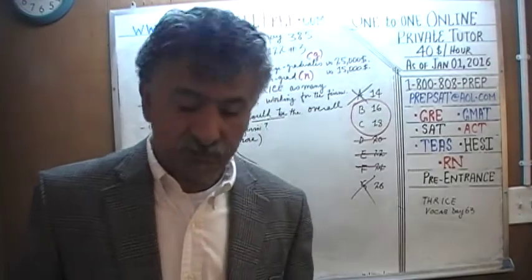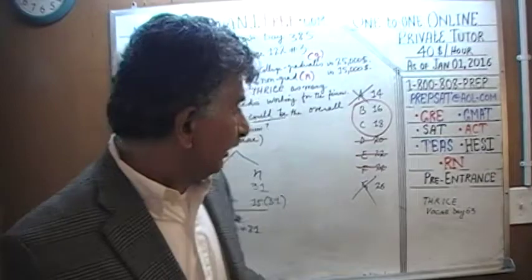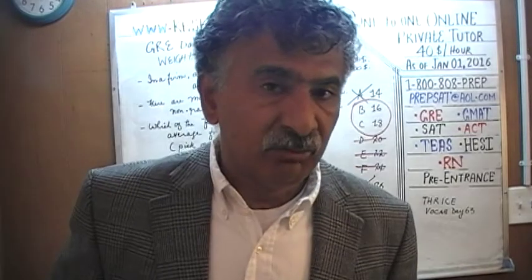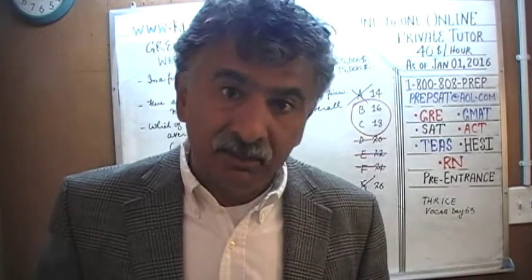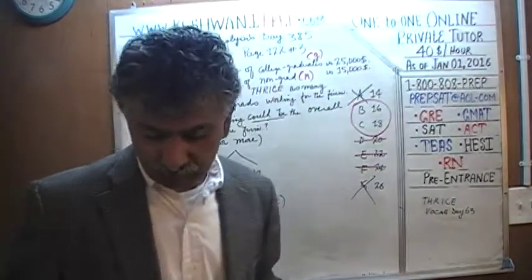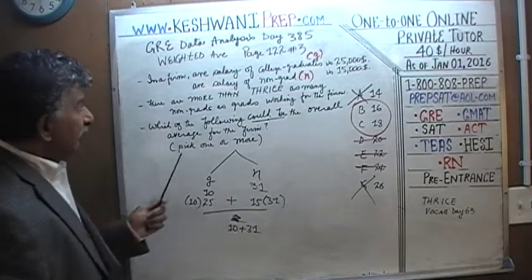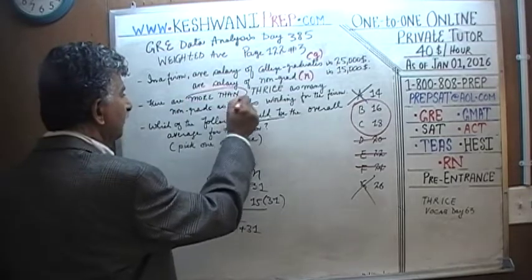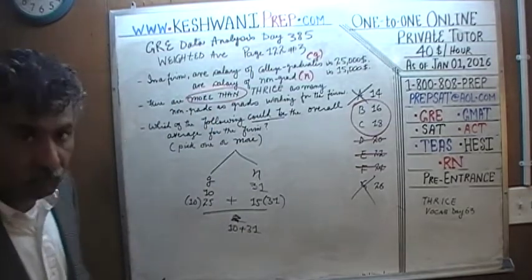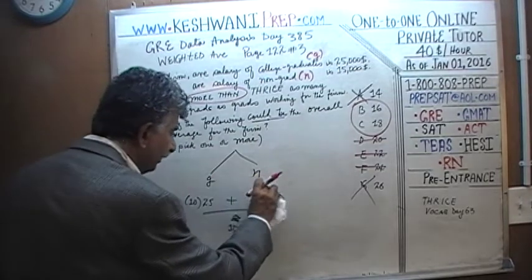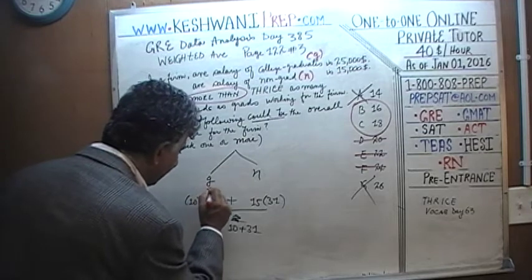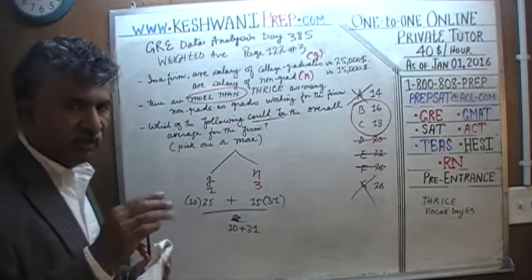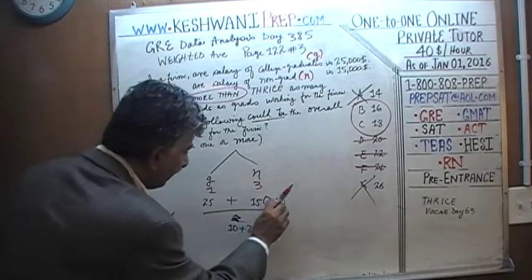Now we move to step three, which is a bit more sophisticated, to determine which of these two — 16 or 18 — is actually possible, or perhaps both are. To start, even though the problem says more than three times as many, we will assume exactly three times as many to establish the limit.